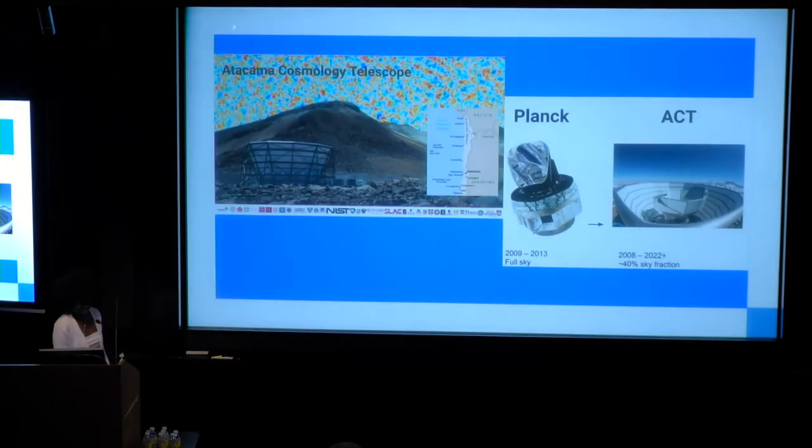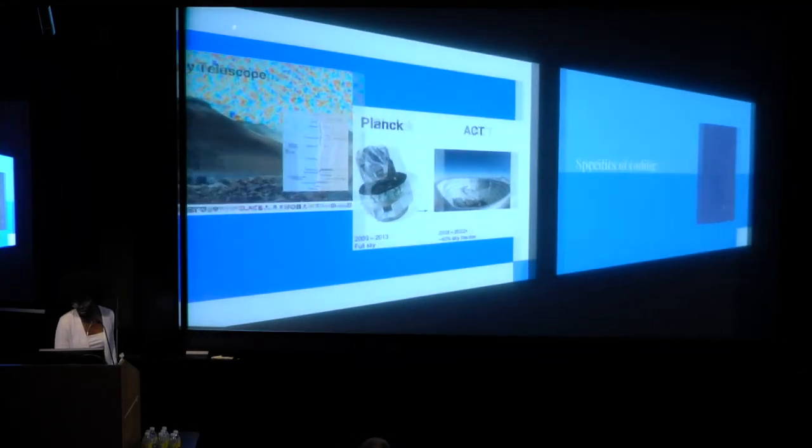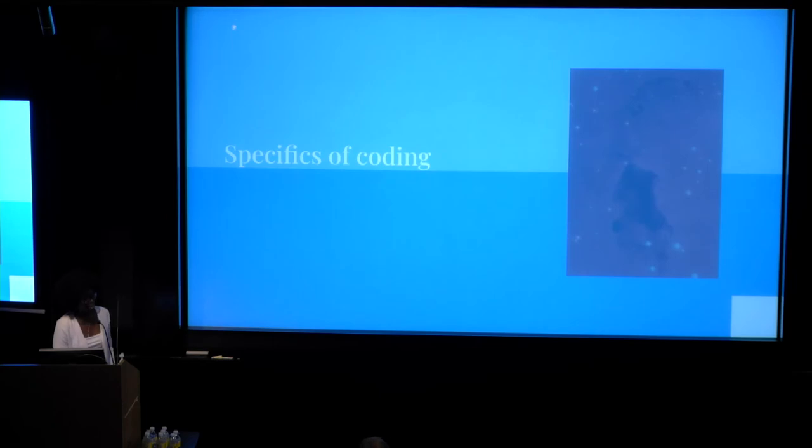So we get our data from the ACT telescope, which is in Chile, and we also get our data from Planck satellite. Now that we know where we get our data from, this is how we analyze them.